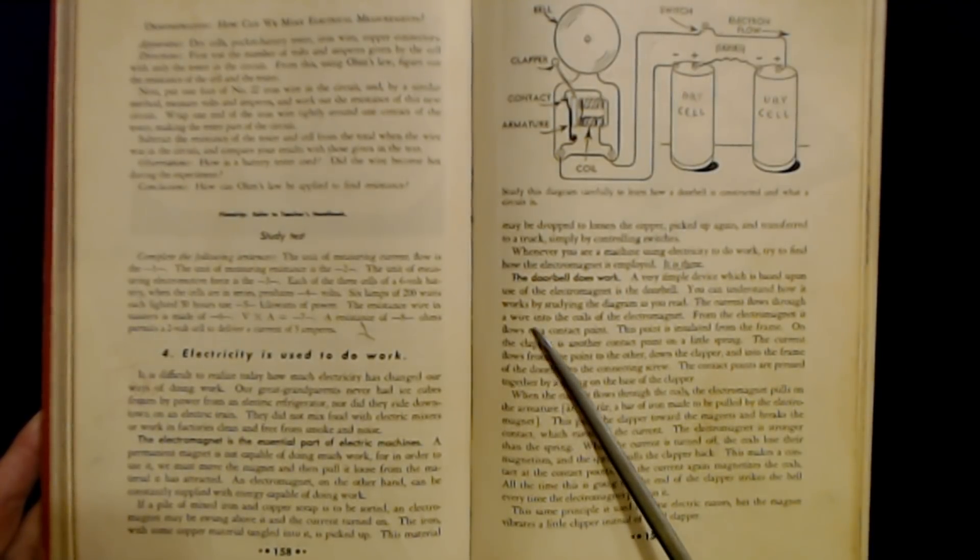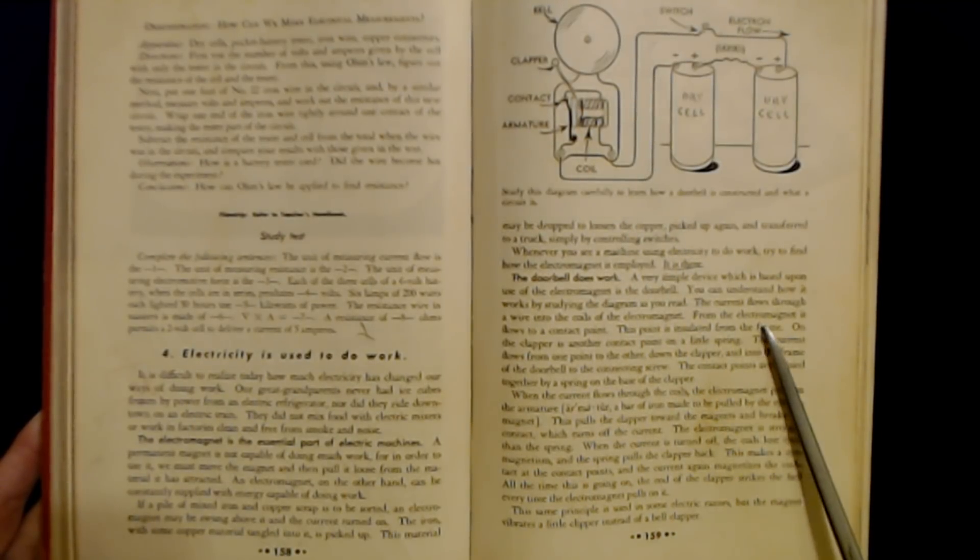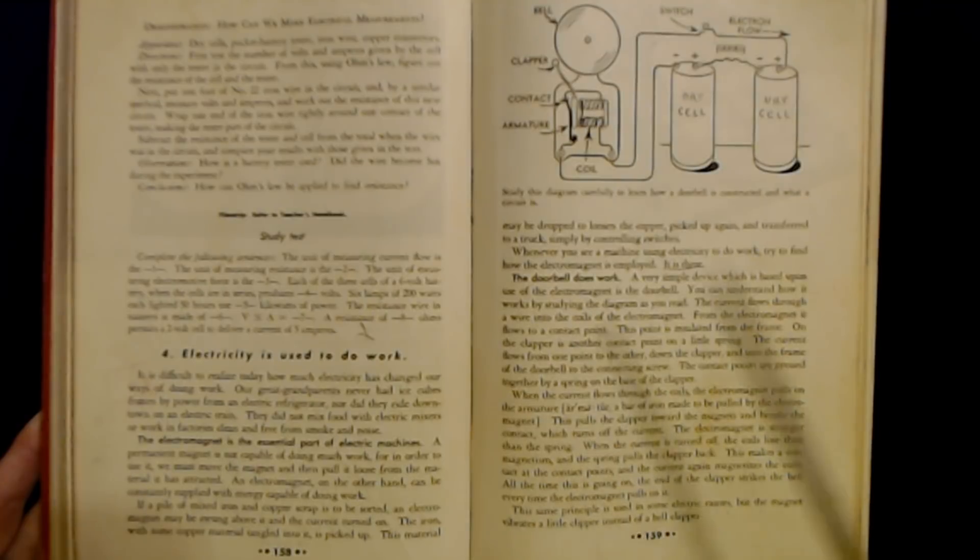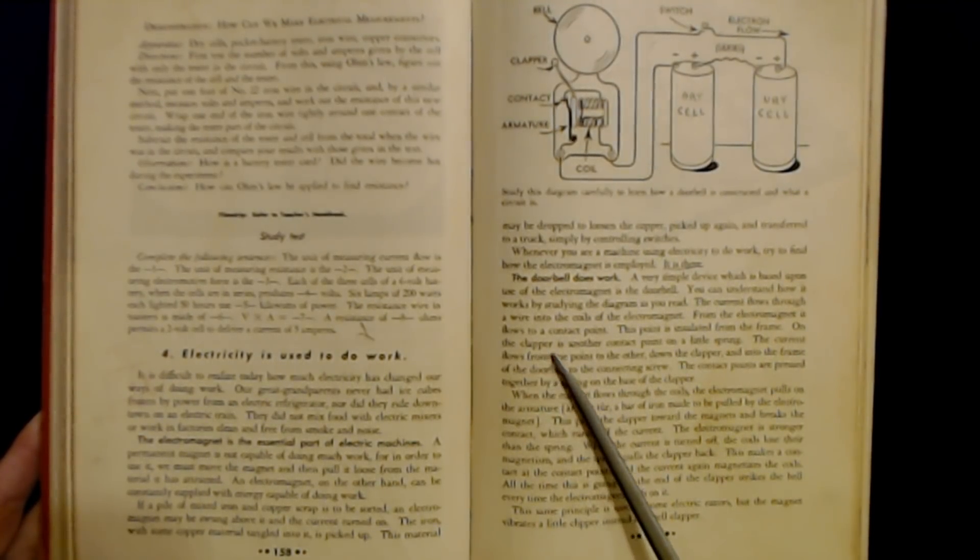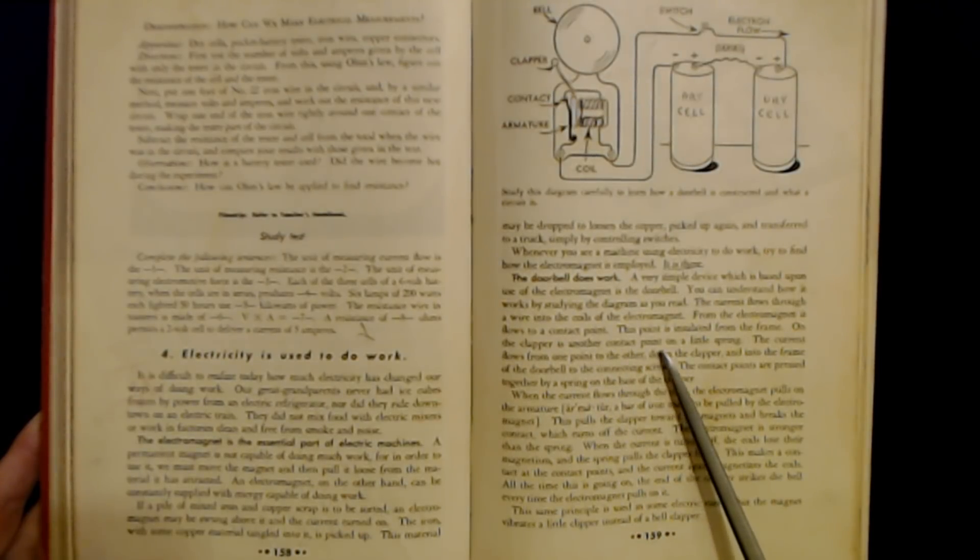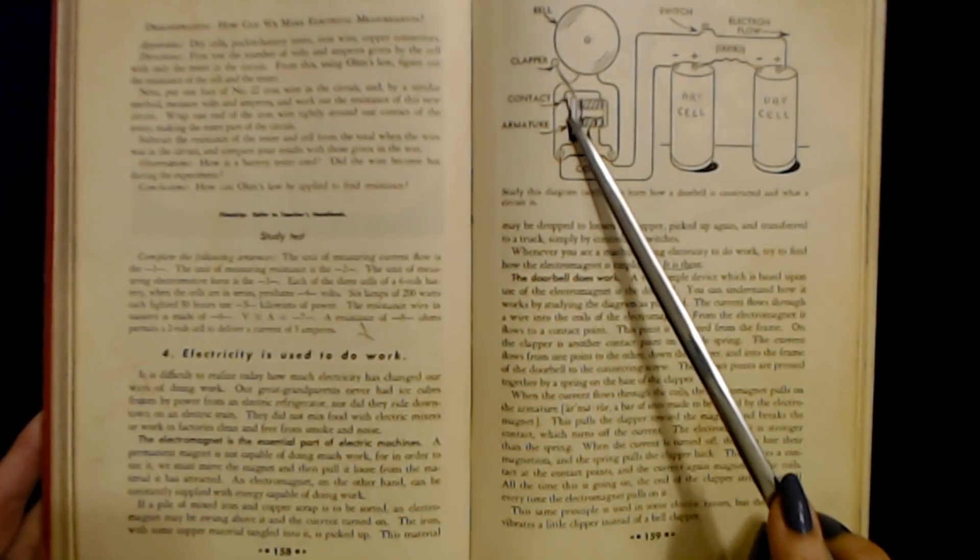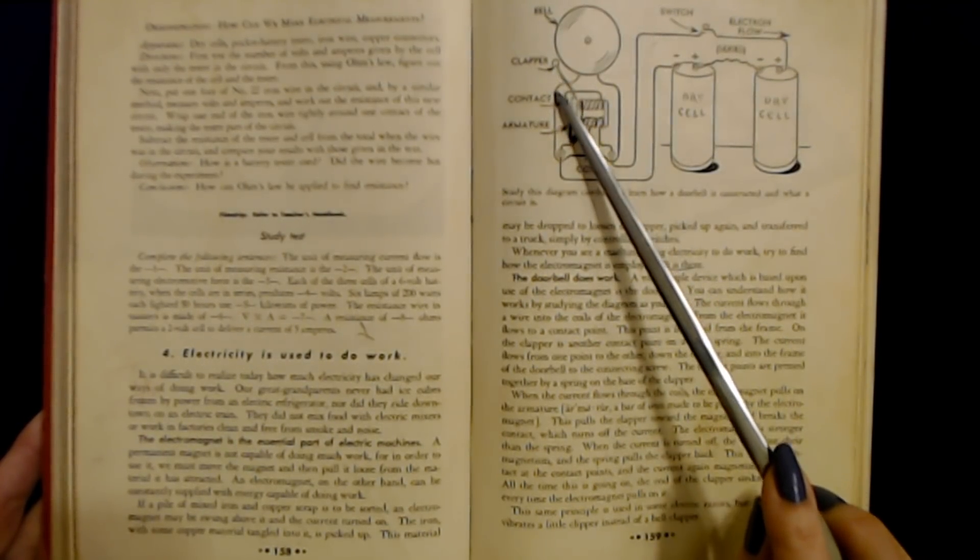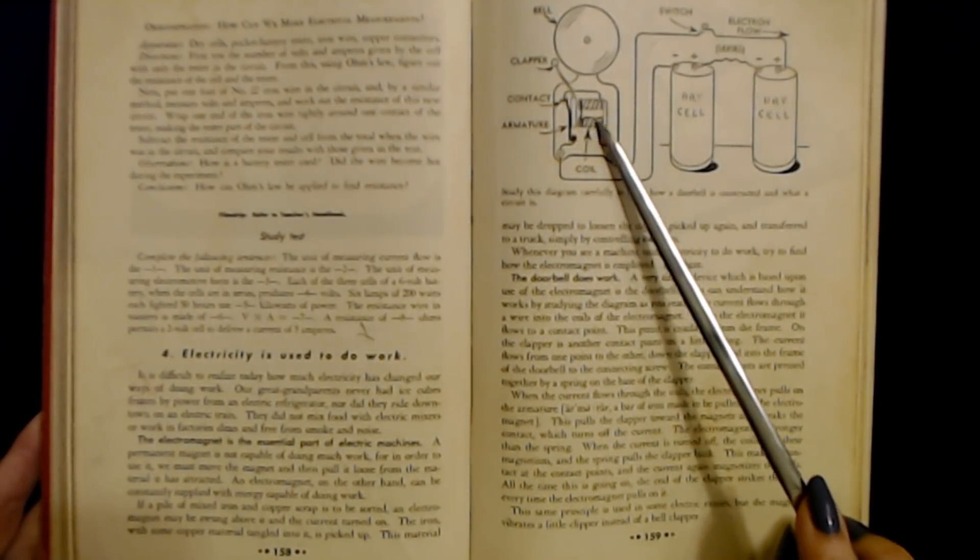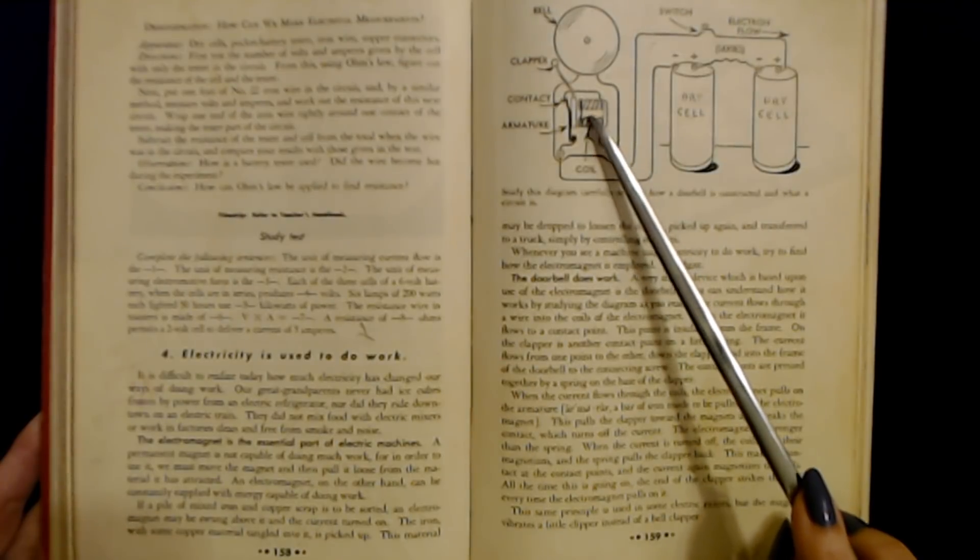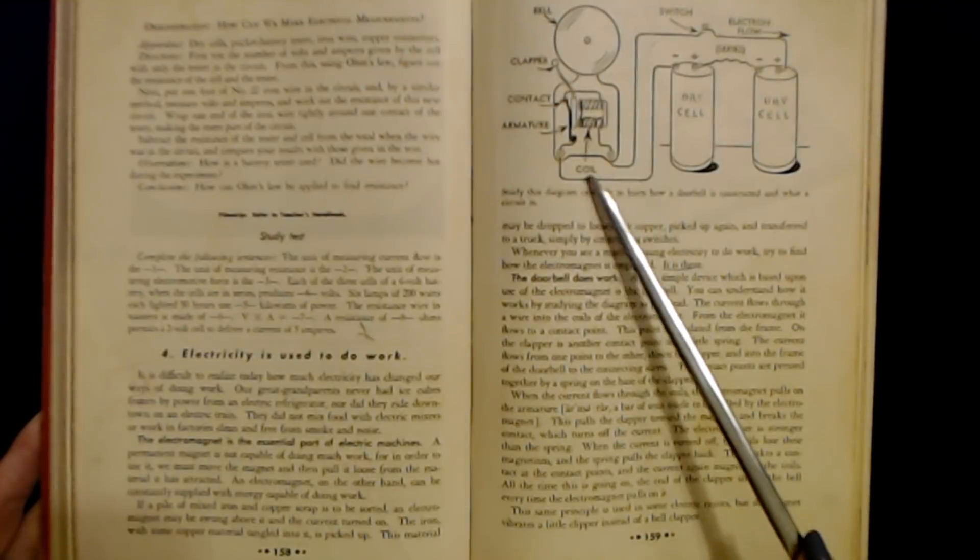The current flows through a wire into the coils of the electromagnet. From the electromagnet, it flows to a contact point. This point is insulated from the frame. On the clapper is another contact point on a little spring. Here's a little spring and there's the contact point right there. So you have a clapper, the contact point, the armature. Here's the coil. The little springs are the coils and here's the bell up here. So this is the doorbell and you have these wires right here.